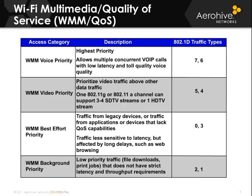Wi-Fi multimedia and quality of service: 802.11e introduced quality of service, and the Wi-Fi Alliance introduced Wi-Fi multimedia QoS. Wi-Fi multimedia QoS combined with devices that support 802.11e exist to provide some type of dedicated quality for particular types of traffic like voice and video. The 802.11e amendment broke this traffic into eight different categories, while Wi-Fi multimedia QoS, or WMM, has condensed that into four. The highest priority would be voice priority.